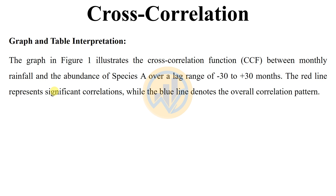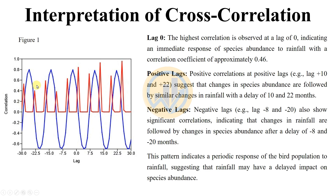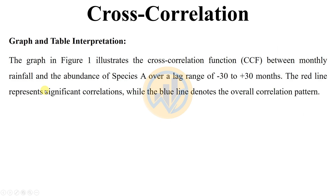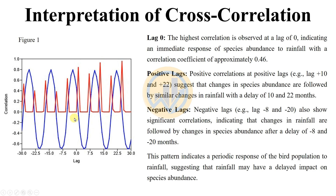In the graph, the red line represents the significance threshold for correlations, while the blue line denotes the overall correlation pattern. The red line indicates statistically significant correlations and the blue line shows the overall correlations in the bird population patterns.